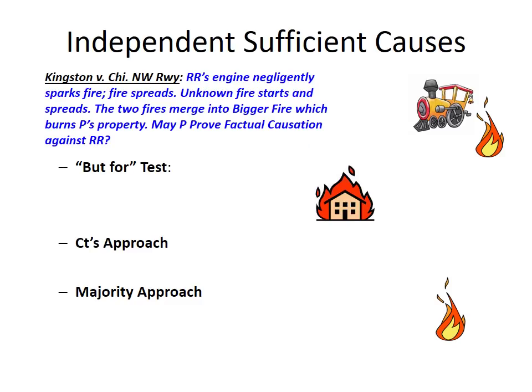Let's take a look at the independent sufficient cause scenario, well illustrated by the case of Kingston v. Chicago Northwest Railway. Here we have a railroad that negligently sparks a fire, and that fire begins to grow. Another fire with an unknown origin also starts to spread. At some point these two fires merge together, and the much bigger fire burns down the plaintiff's property. The question is whether the plaintiff can prove factual causation against the railroad for its negligence in starting that first fire.